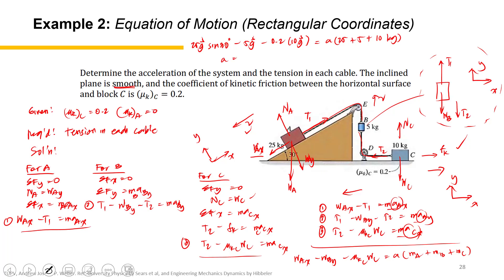So for a, 25 times 9.81 times sine 30 minus 5 times 9.81 minus 0.2 times 10 times 9.81 divided by 25 plus 5 plus 10. And 1.35. The acceleration is 1.35 meter per second squared. That's one of the questions. So let's box the acceleration of the system.